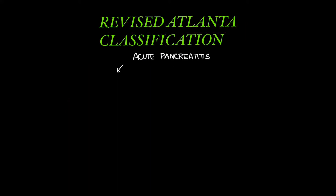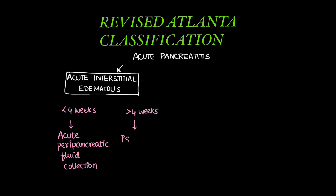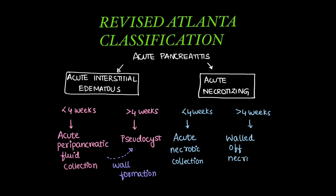Moving on to the revised Atlanta classification, which introduces new terminology for fluid collections. Acute interstitial edematous pancreatitis: collections less than 4 weeks are called acute peripancreatic collection, and after 4 weeks with wall formation it becomes a pseudocyst. Acute necrotizing pancreatitis: collections less than 4 weeks are called acute necrotic collection, and more than 4 weeks with wall formation is called walled-off necrosis.